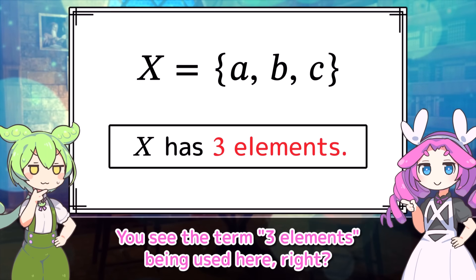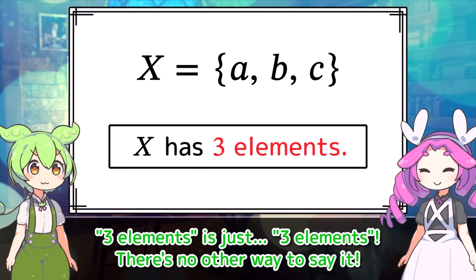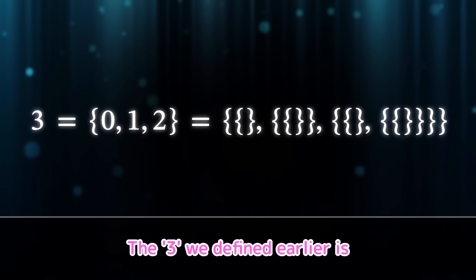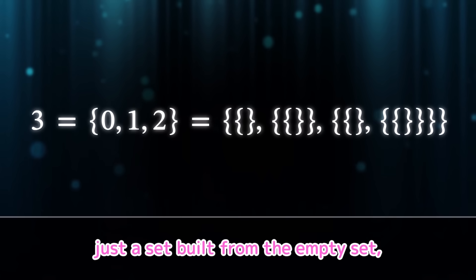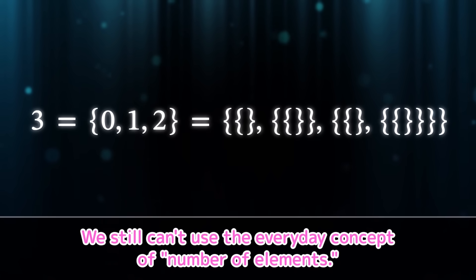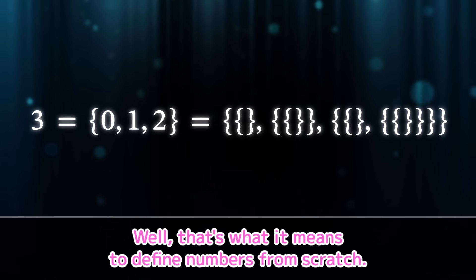Look carefully, Syndemon. You see the term three elements being used here, right? So what exactly does three elements mean? Three elements is just three elements. There's no other way to say it. Well, yeah, but still. The three we defined earlier is just a set built from the empty set. So the term three elements doesn't actually have any meaning yet. We still can't use the everyday concept of number of elements.